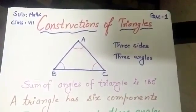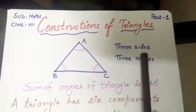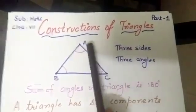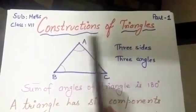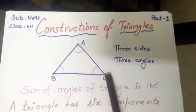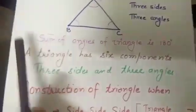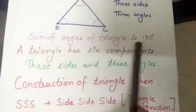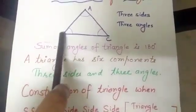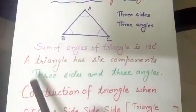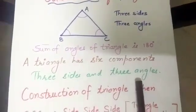As we all know, a triangle has three sides, three angles. This is a triangle ABC. It has three sides AB, BC, AC and angles, angle ABC. Let us recall some properties. Sum of angles of a triangle is 180 degree. A triangle has six components, three sides, three angles for construction.